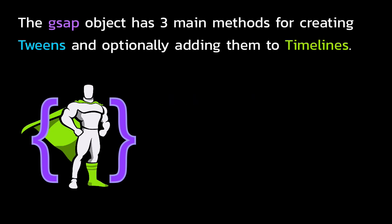The GSAP object has three main methods for creating tweens and optionally adding them to timelines. There's GSAP.to, GSAP.from, and GSAP.fromTo. You'll be surprised at how much you can do with these three little methods. Before we get too technical, let me show you exactly what tweens and timelines are and what they can do.